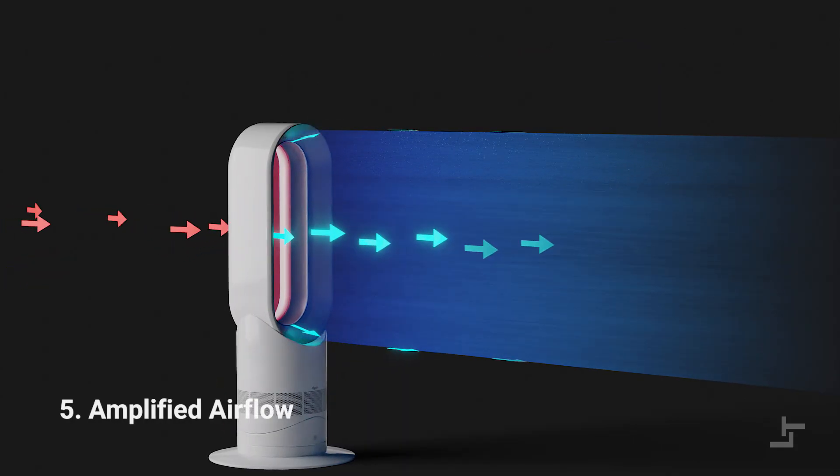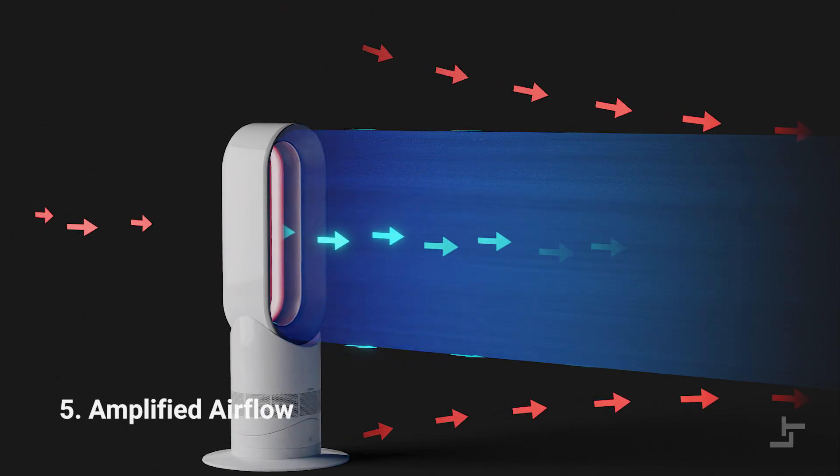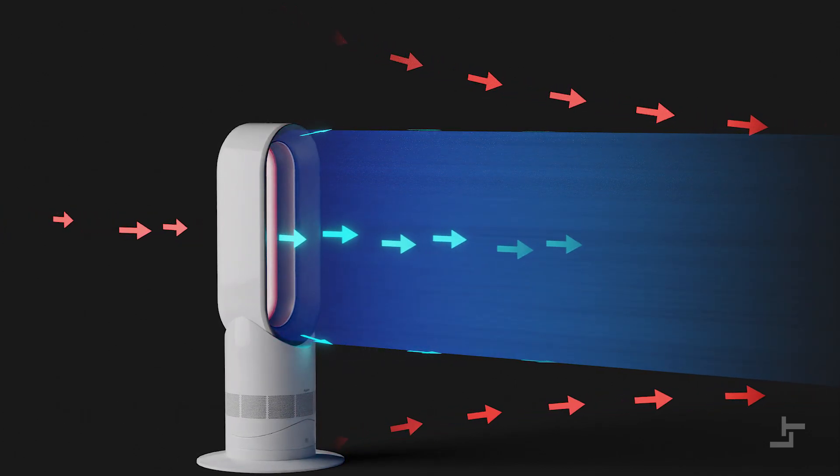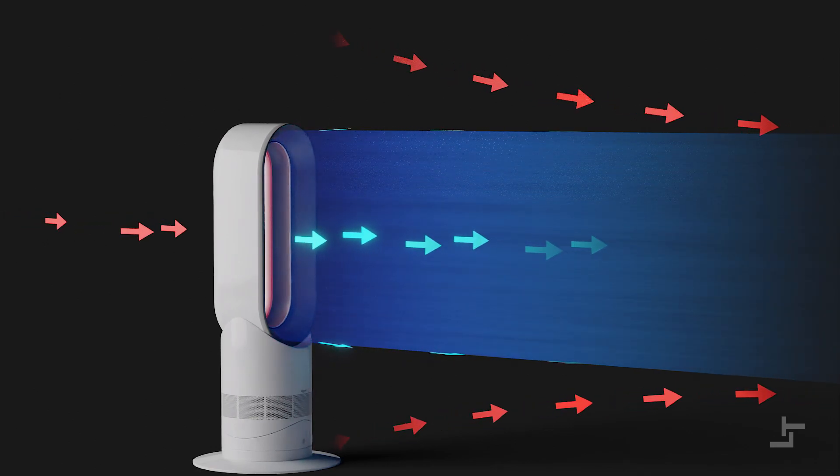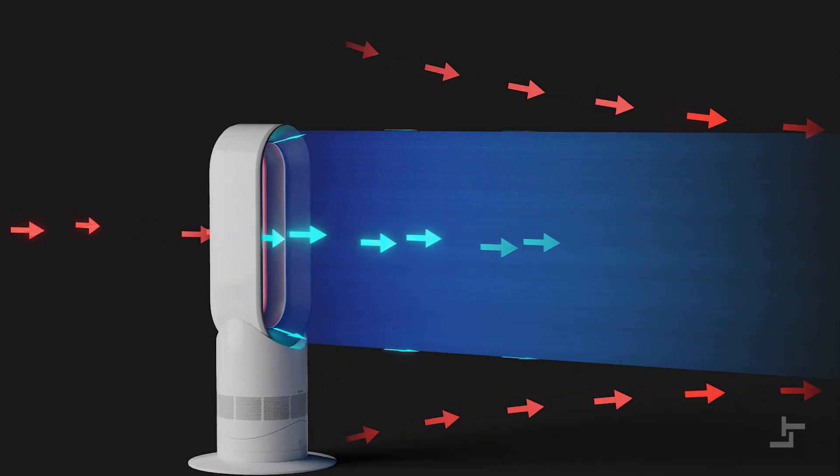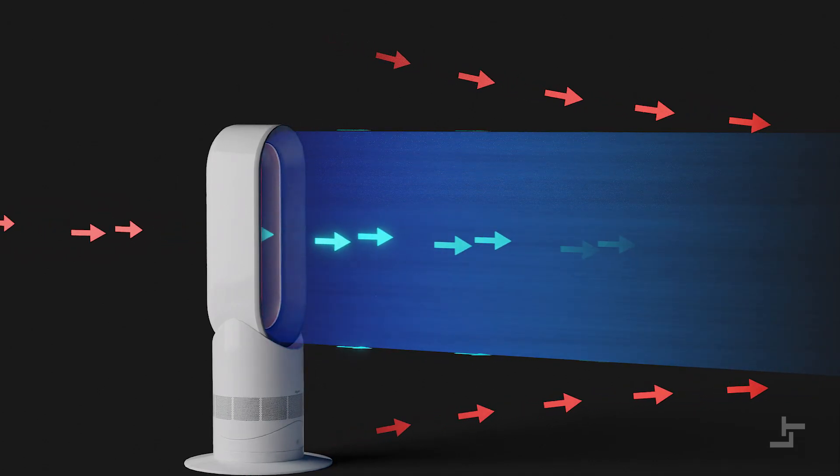Amplified airflow: Additional air is drawn into the airflow from the surrounding environment in a process called entrainment, in a fashion very similar to inducement. The original airflow leaving the annular aperture combined with the induced and entrained air results in the overall airflow being amplified by up to 15 times.